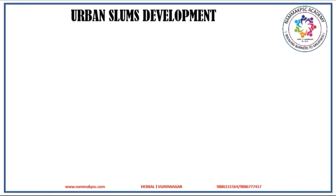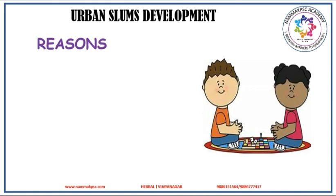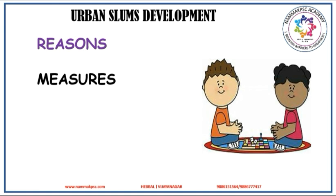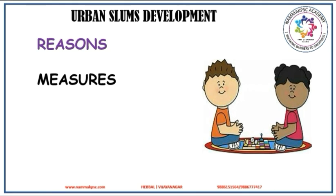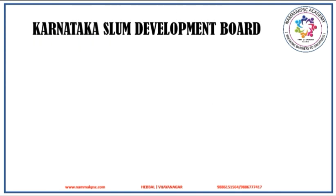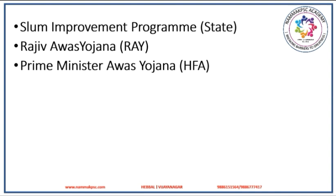Let us discuss about urban slums development. For this purpose, Karnataka Government has set up the Karnataka Slum Development Board, which is implementing three schemes for urban slum development: first, the slum improvement program; second, Rajiv Aas Yojana, which is a central scheme; and third, Pradhan Mantri Avas Yojana, which is also a central scheme.